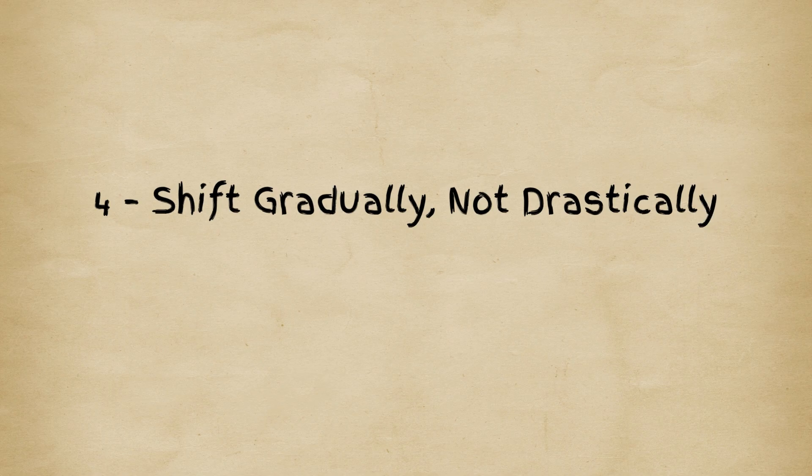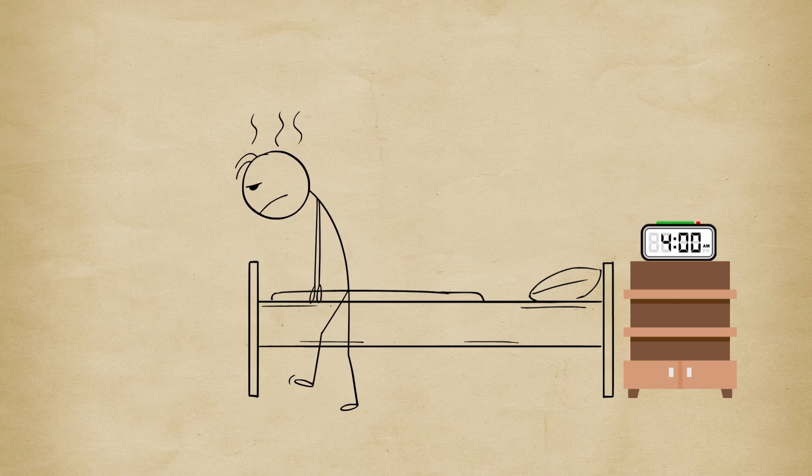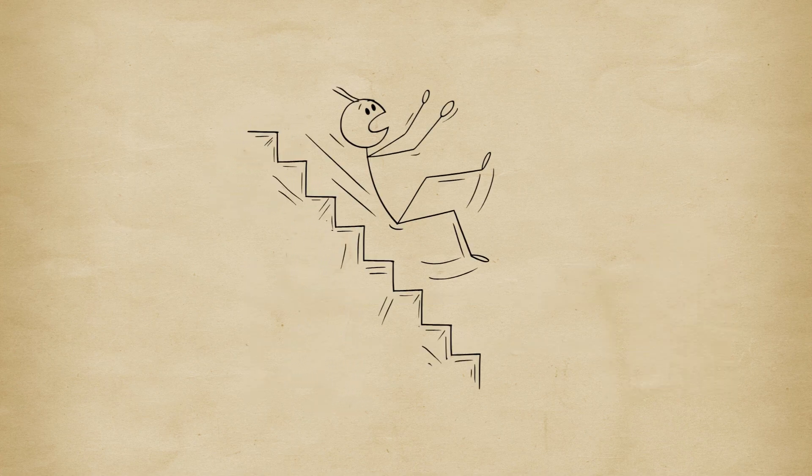4. Shift gradually, not drastically. Here's where most people mess up. They try to wake up 2 hours earlier overnight. That's a recipe for failure.